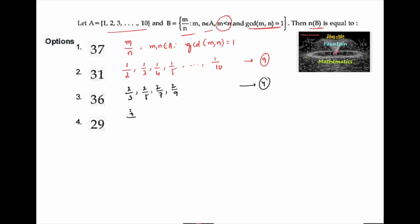Starting with 3: 3 upon 4 is valid, 3 upon 5 is valid, 3 upon 6 is not possible, 3 upon 7 and 3 upon 8 are valid, and 3 upon 10 is valid. So 5 elements.